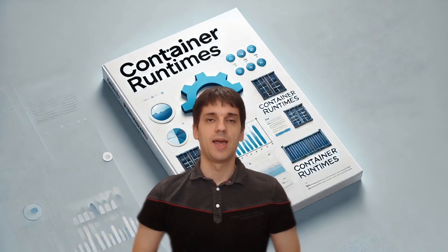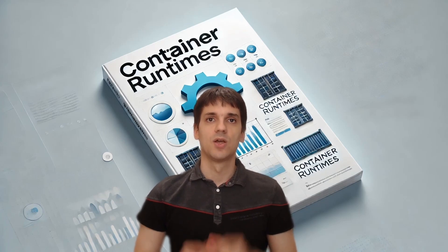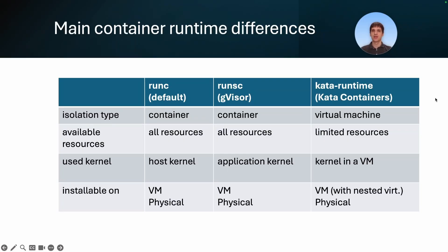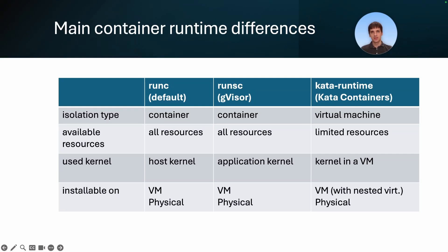In this table I compare these runtimes. At the top you can see the runtimes: runc, runsc from gVisor, and the kata runtime from Kata Containers. When you are using runc or runsc you are running containers, and when you are using the kata runtime you will run a small virtual machine with the container running inside that VM. Basically almost everything we discuss in this video is caused by this distinction.